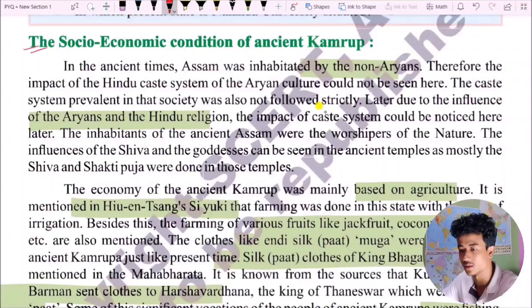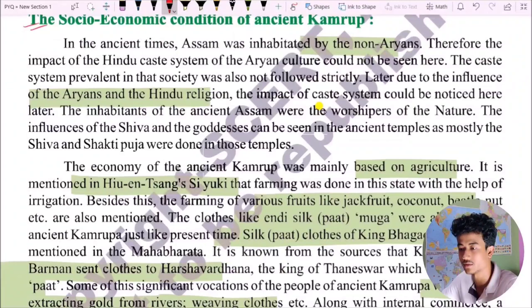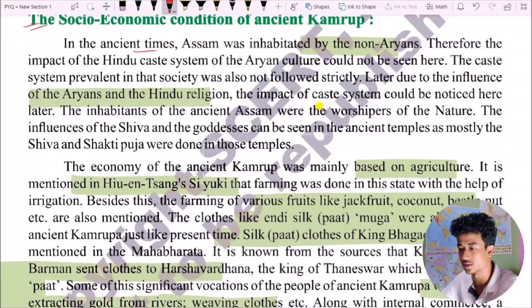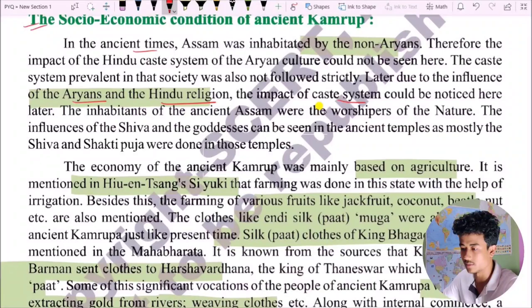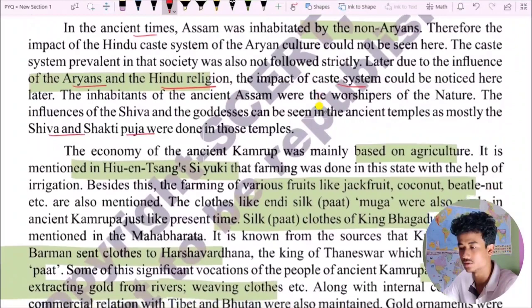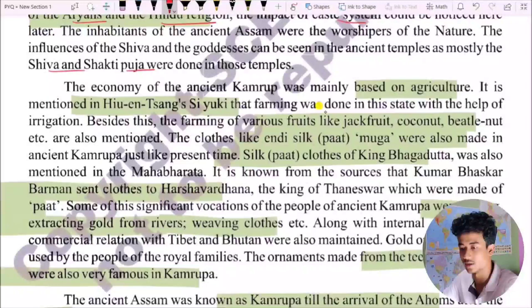The statues of Hindu gods and goddesses — Shiva, Vishnu, Saraswati, Surya, Kalpavriksha, and Apsaras — were found there. In ancient Kamarupa, Assam was inhabited by non-Aryans. Therefore, the impact of the Hindu caste system of Aryan culture could not be seen here. The caste system prevalent in society was also not followed strictly. Later, due to the influence of the Aryans, Hindu religion arrived and the impact of the caste system was noticed.